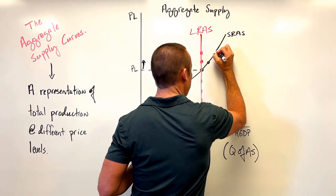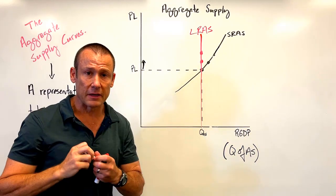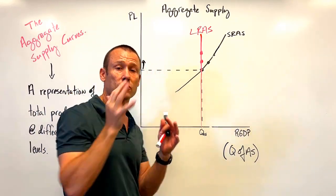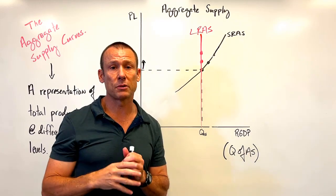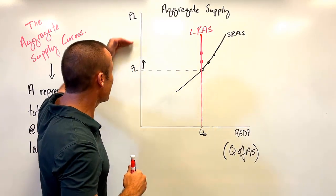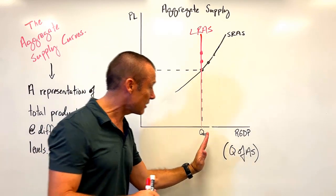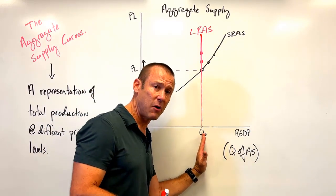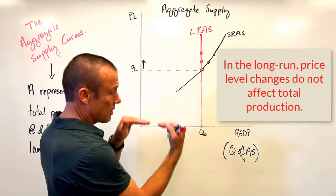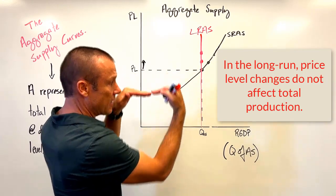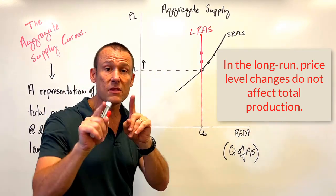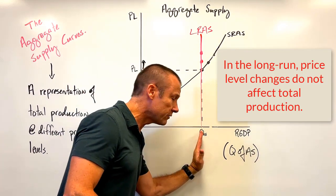The long-run aggregate supply curve shows that when price level changes in the long run, that doesn't affect output — it has no impact on output — because costs change in proportion to revenue changes. So there's no reason to change how much we're producing in the long run.